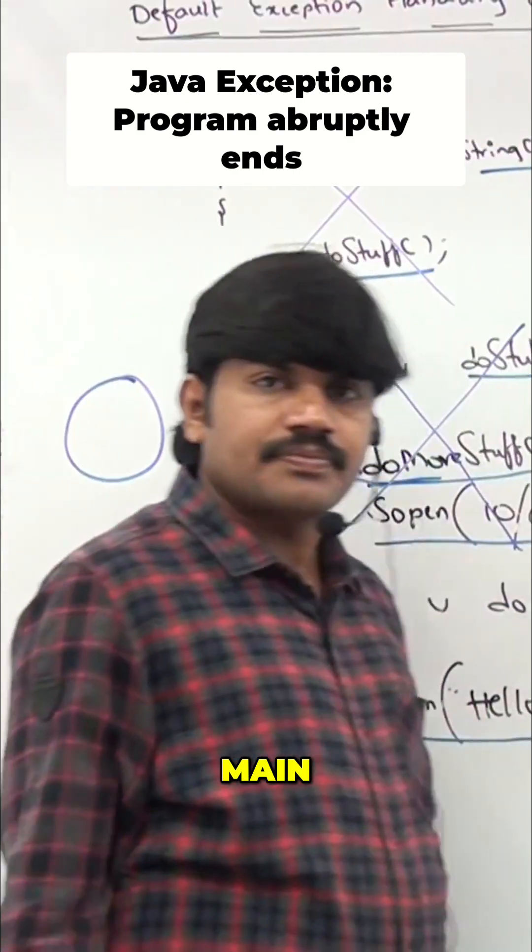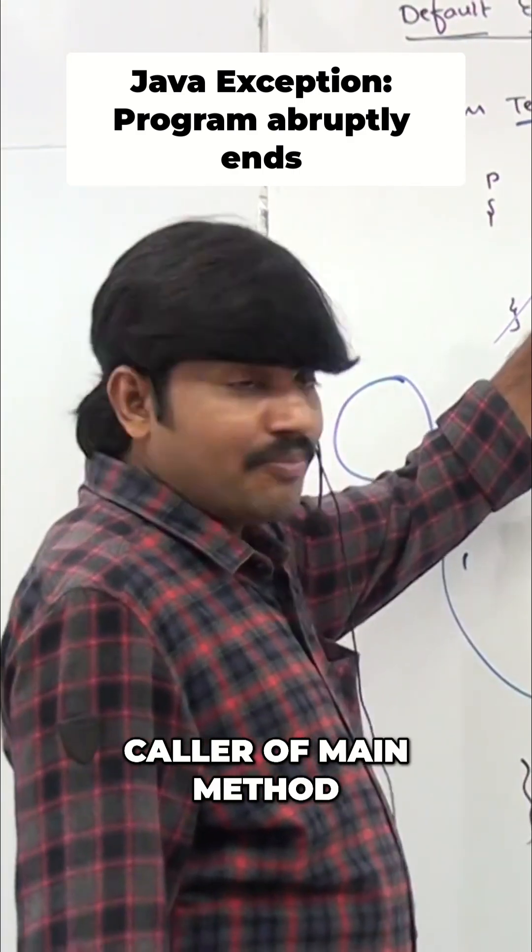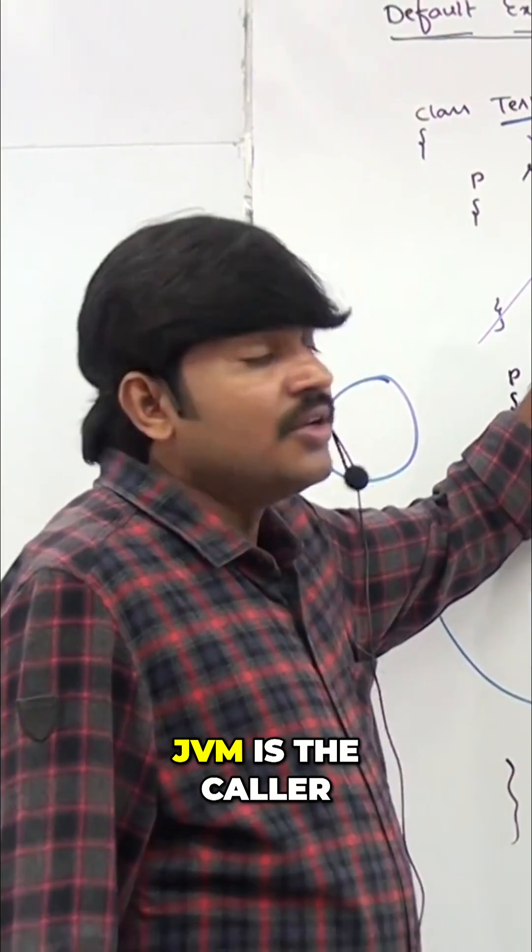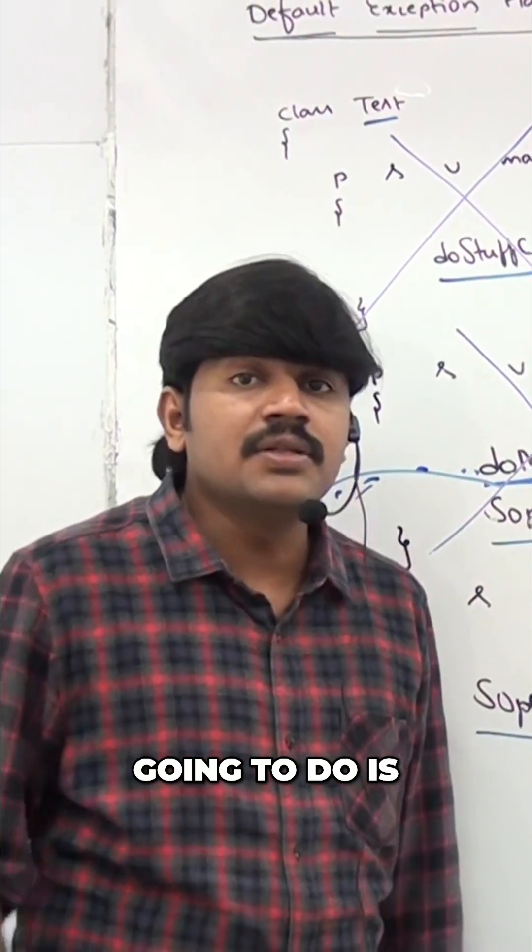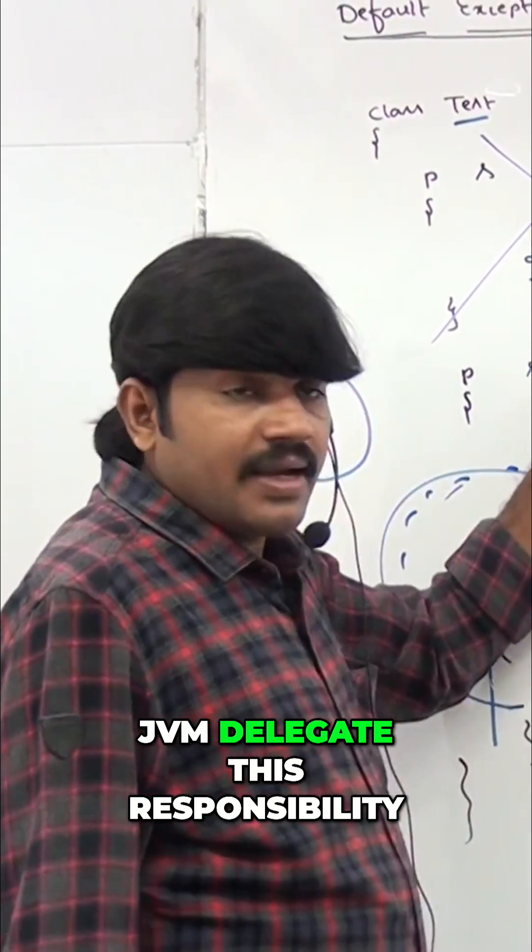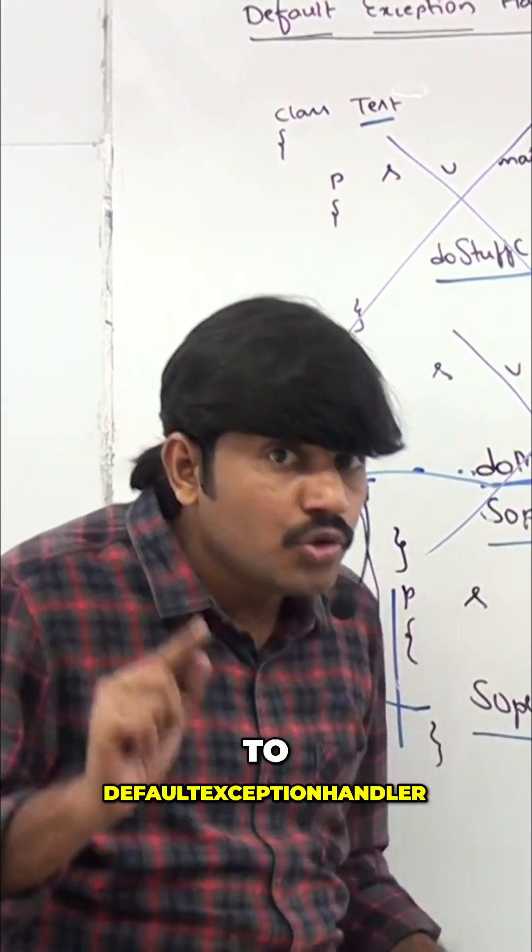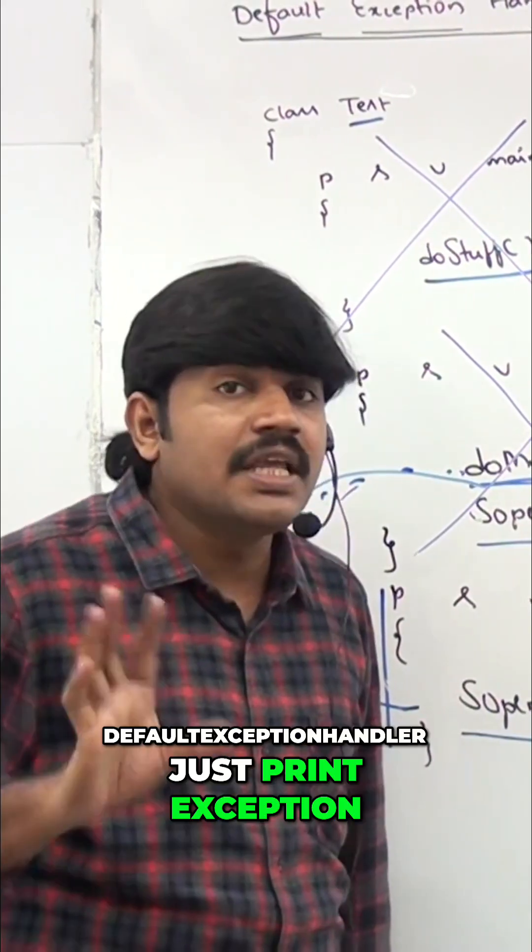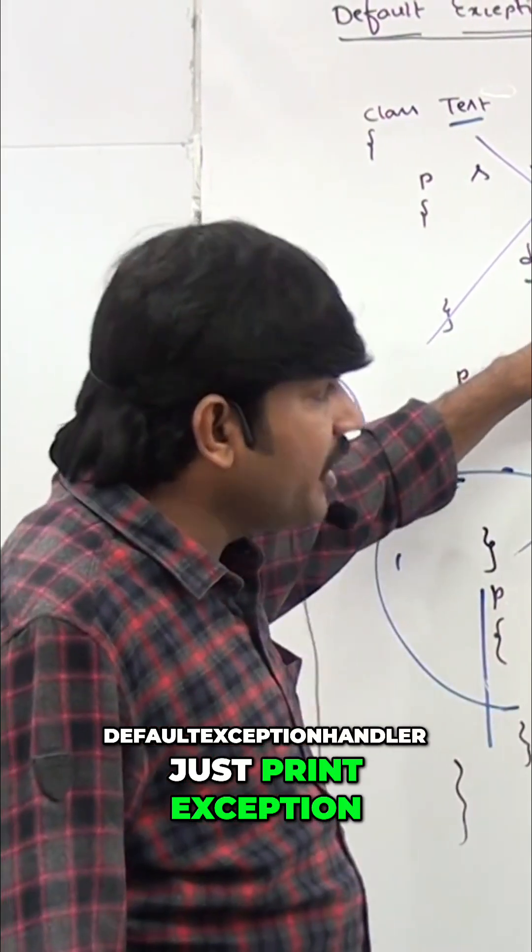Which is the caller of main method? Who is the caller of main method? JVM is the caller. Now what the JVM is going to do is delegate this responsibility to the default exception handler. The default exception handler just prints